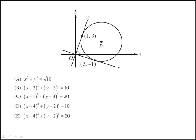So in this problem we're given the circle which has a center P and it is tangent to these two perpendicular lines. The question is, which of the following is an equation of the circle with center P?